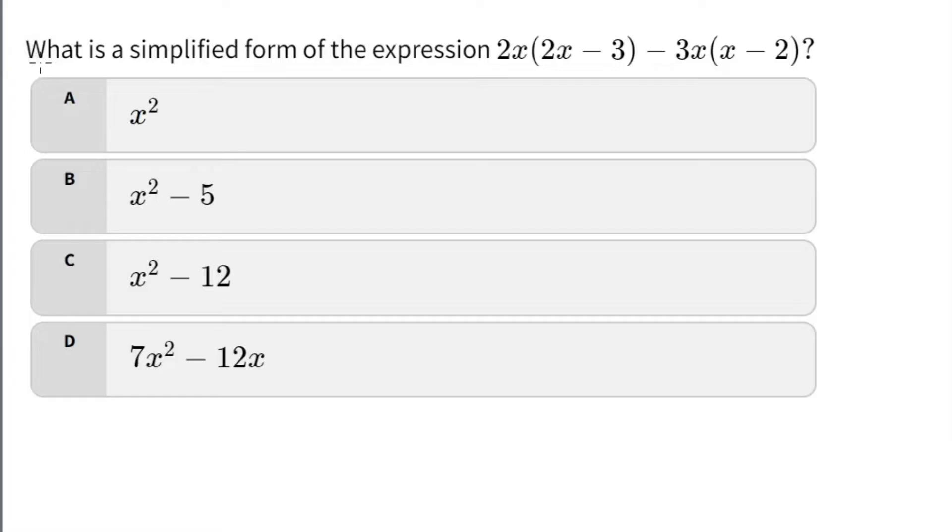For our first question, it's asking us what is a simplified form of the expression 2x(2x - 3) - 3x(x - 2)? The first thing I notice here is that we can use distributive property. So I have a 2x outside of my bracket, so I can distribute it to the 2x inside and to the negative 3. Next I see this negative 3x, and I'm going to distribute this to my x here, and then to my negative 2. So now let's write it out.